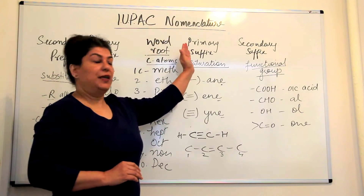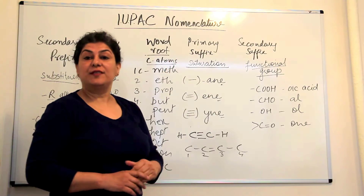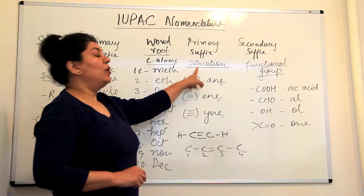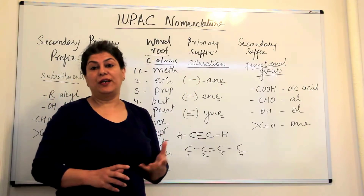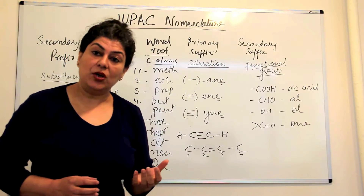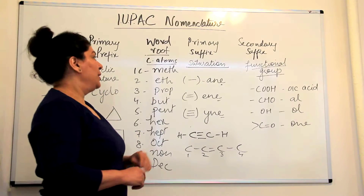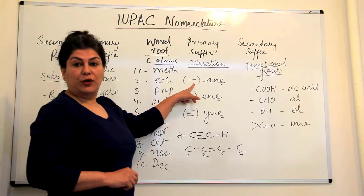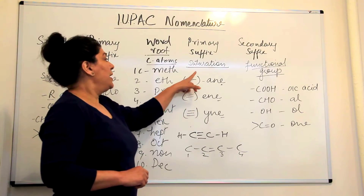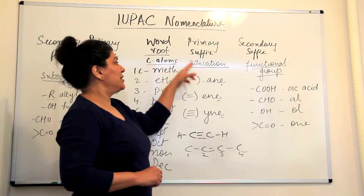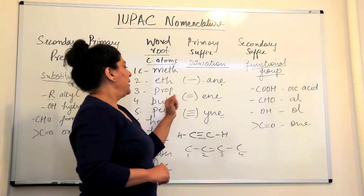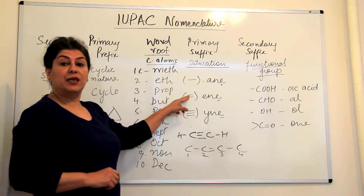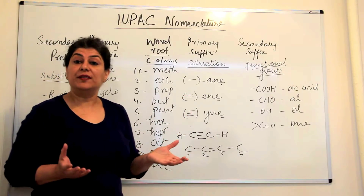The second part of the name is the primary suffix. The primary suffix gives us an idea of the saturation of the hydrocarbon — whether it is saturated or unsaturated. Saturated means the hydrocarbon has only single bonds. For such a hydrocarbon, we use the suffix '-ane.' If the hydrocarbon is unsaturated, it may have a double or a triple bond.